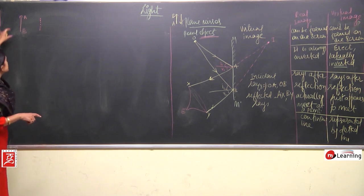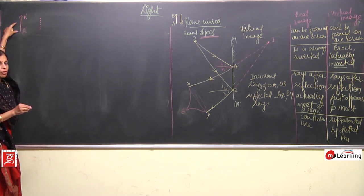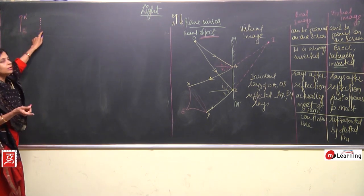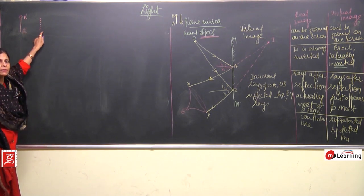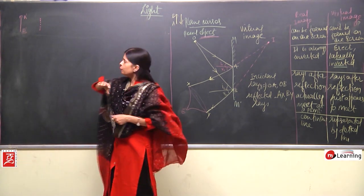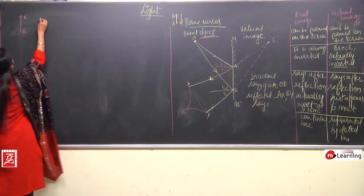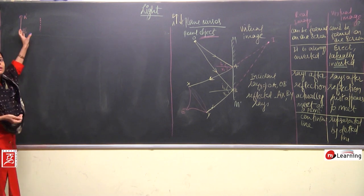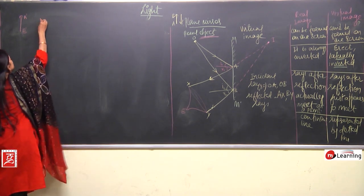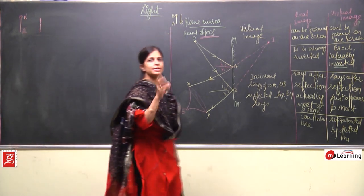In the same way, when we talk about the image of an extended object, the image is the collection of images of many, many point objects. So the images of many point objects, when joined together, will give us the image of the extended object.